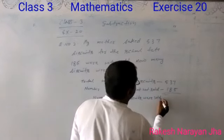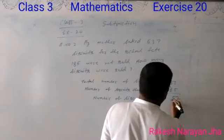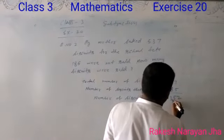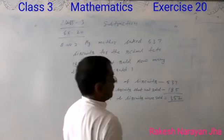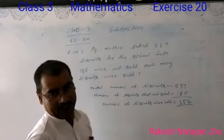537 minus 185 equals 352. 352 biscuits were sold on school day.